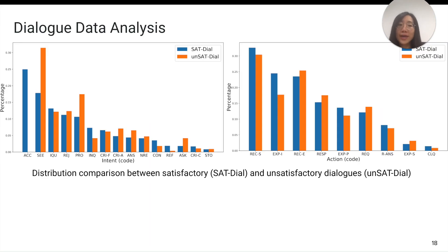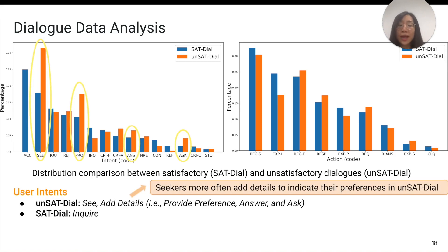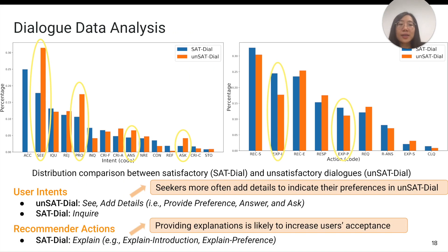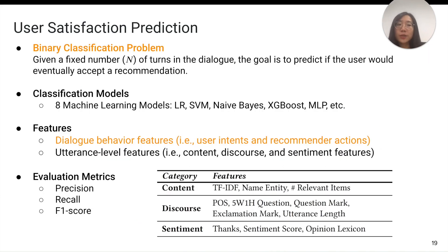Before doing the prediction, we investigated the relationships from user intent and recommender actions to user satisfaction. Specifically, we computed the second-level intent and action distribution for both satisfactory and unsatisfactory dialogues and illustrated the results with two bar charts. In terms of user intent, seekers more often have seen the recommended item and are likely to add details to indicate their preferences in unsatisfactory dialogues. Regarding recommender actions, the action 'explain' occurs more frequently in satisfactory dialogues, implying that providing explanation is likely to increase users' acceptance of recommended items. These results motivate us to incorporate them as features for satisfaction prediction. For satisfaction prediction, given a fixed number of dialogue turns, we predict whether users will finally accept the recommendation, particularly considering dialogue behavior features including user intent and recommender actions.